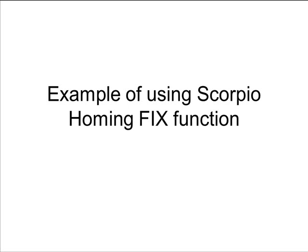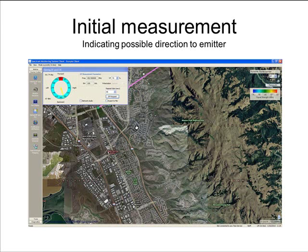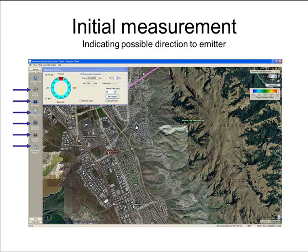This presentation shows an example of using the TCI Scorpio application performing a homing fix function. The homing fix screen presents direction finding measurements in such a way as to simplify the operator's task of finding the location of an unknown emitter using a vehicle-mounted TCI metrics measurement and direction finding system. This page shows the Scorpio application homing fix screen. The vertical bar to the left of the screen is the Scorpio application navigation bar, which an operator uses to select various Scorpio functions including the homing fix function shown here.